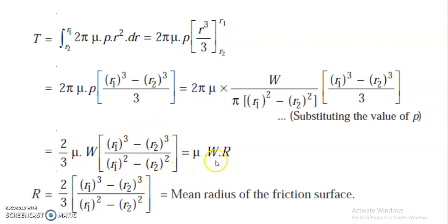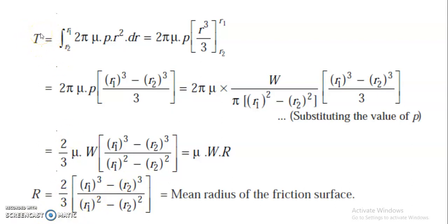The term (R1³ − R2³) / (R1² − R2²) is termed as capital R, the mean radius of the friction surface. So finally we get T = μWR, where R = (2/3) × (R1³ − R2³) / (R1² − R2²). This is the formula for torque to be transmitted considering uniform pressure — that is, uniform pressure within the friction surface but non-uniform wear. Using that consideration, T = μW·R.